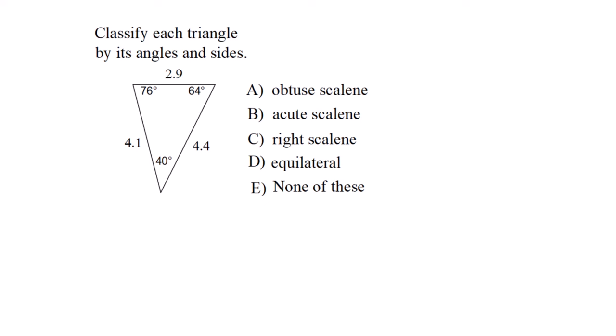Classify each triangle by its angles and sides. All three sides are different lengths, making this scalene. This is a vocabulary problem. Now determine by angles: all angles are less than 90 degrees, making it acute. The answer is B, acute scalene.